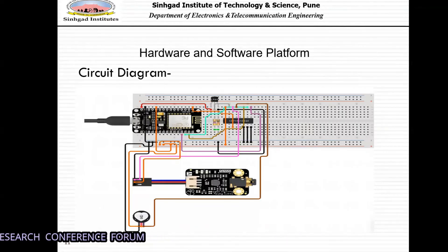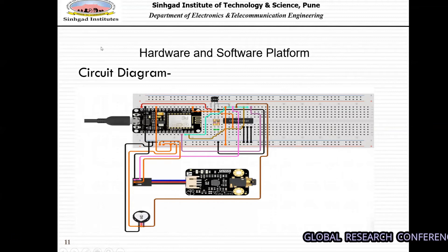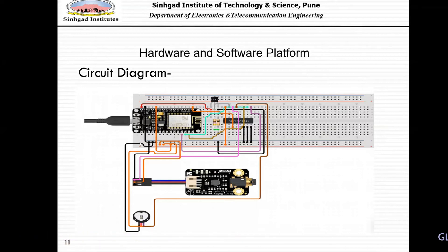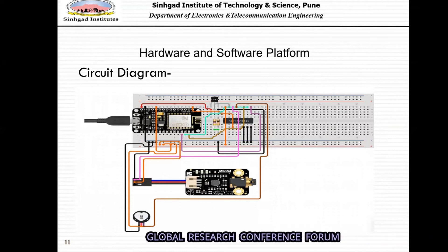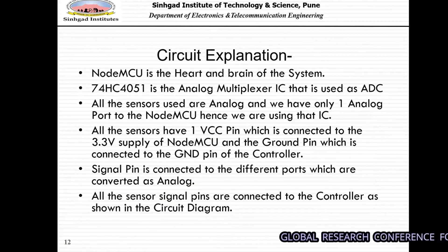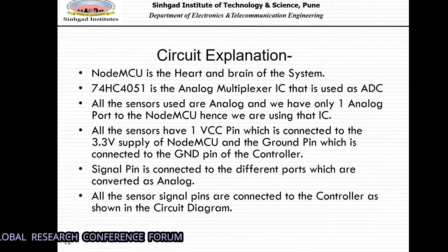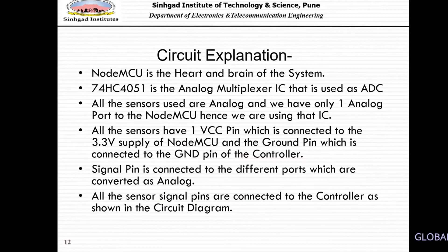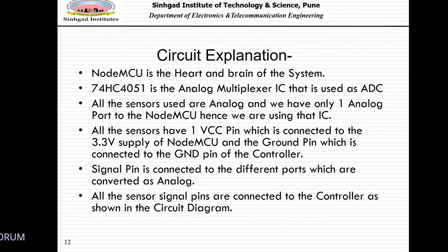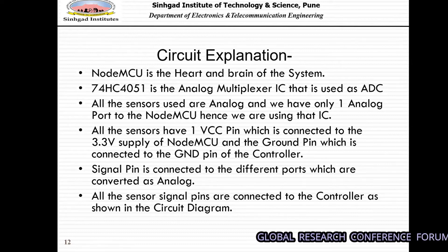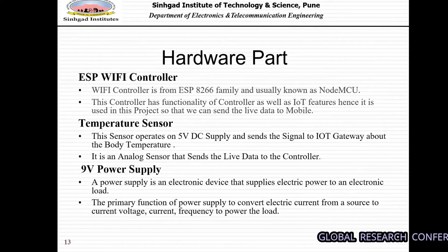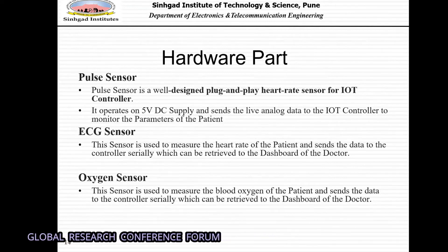This is the basic circuit diagram in which we are using an ESP8266 WiFi module and an Arduino with a pulse sensor and temperature sensor LM35. NodeMCU is the heart and brain of the system. The 74ST4051 is the analog multiplexer IC used as an analog-to-digital converter. All sensors have one VCC pin connected to the 3.3V supply of NodeMCU and a ground pin connected to the controller ground. The signal pin is connected to different ports as analog input. For hardware, we are using the ESP8266 controller, temperature sensor, and a nine-volt power supply, along with a pulse sensor or ECG sensor and an oxygen sensor.